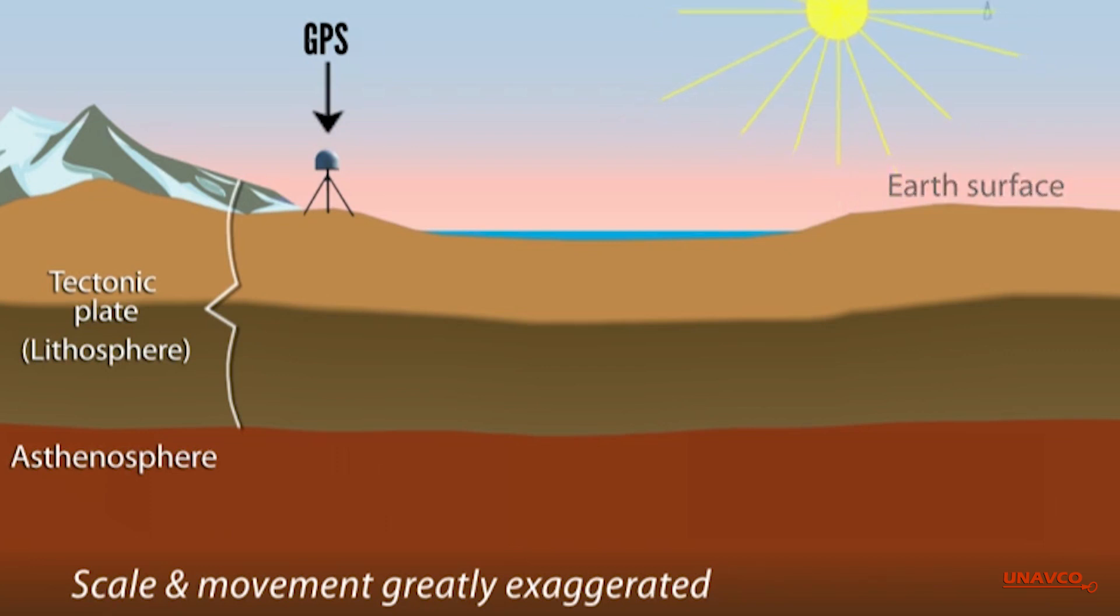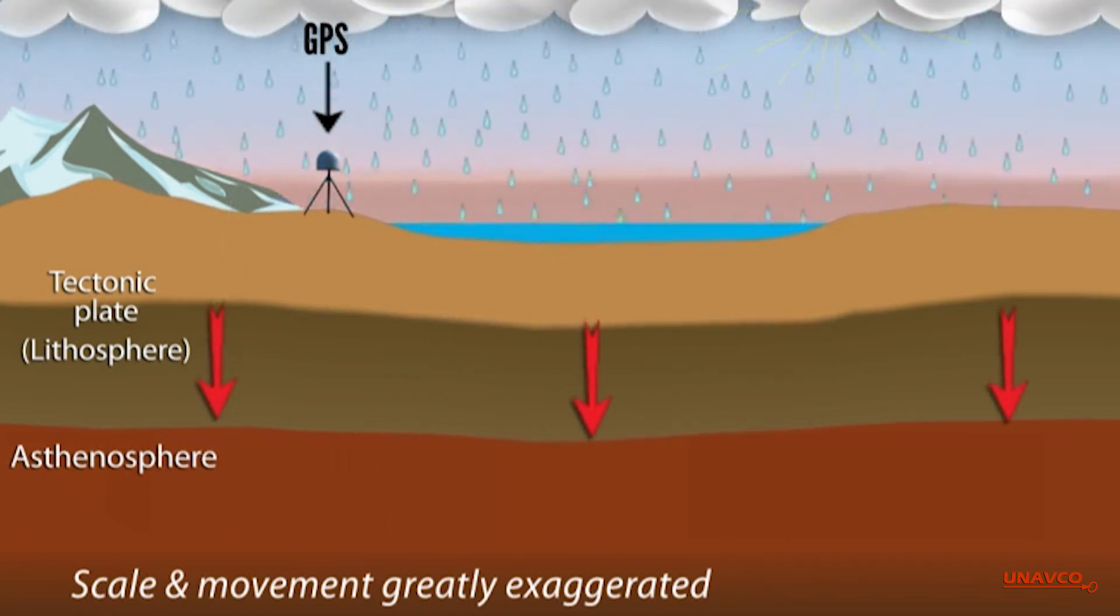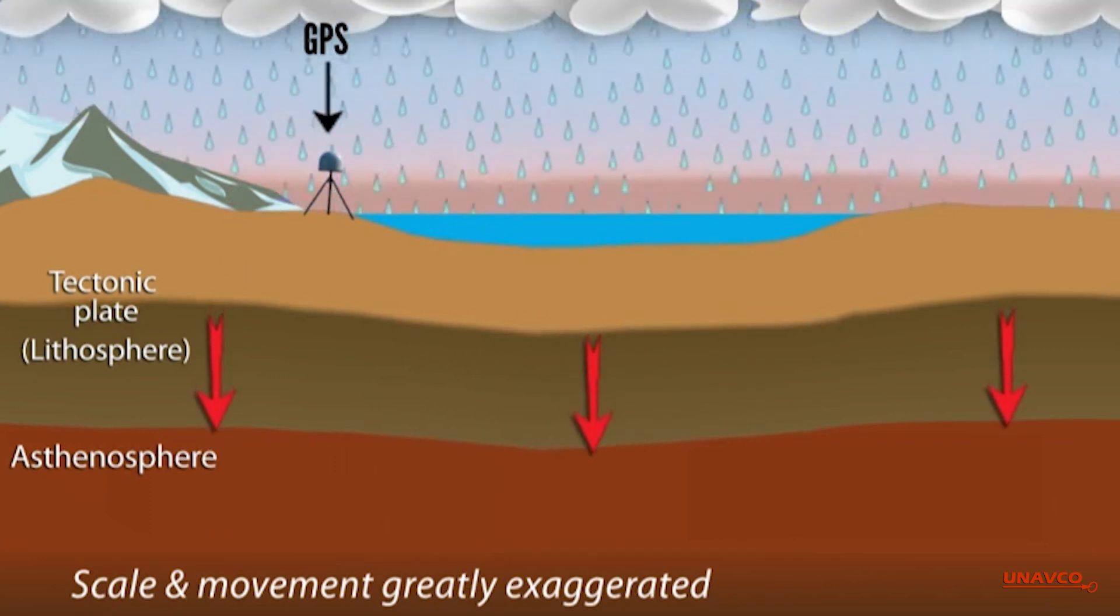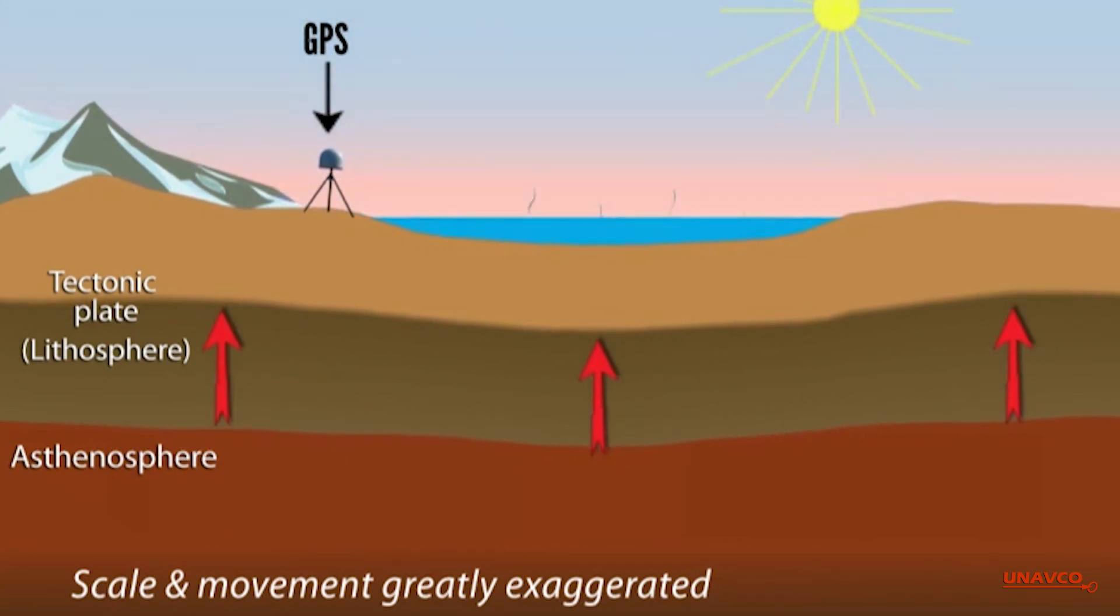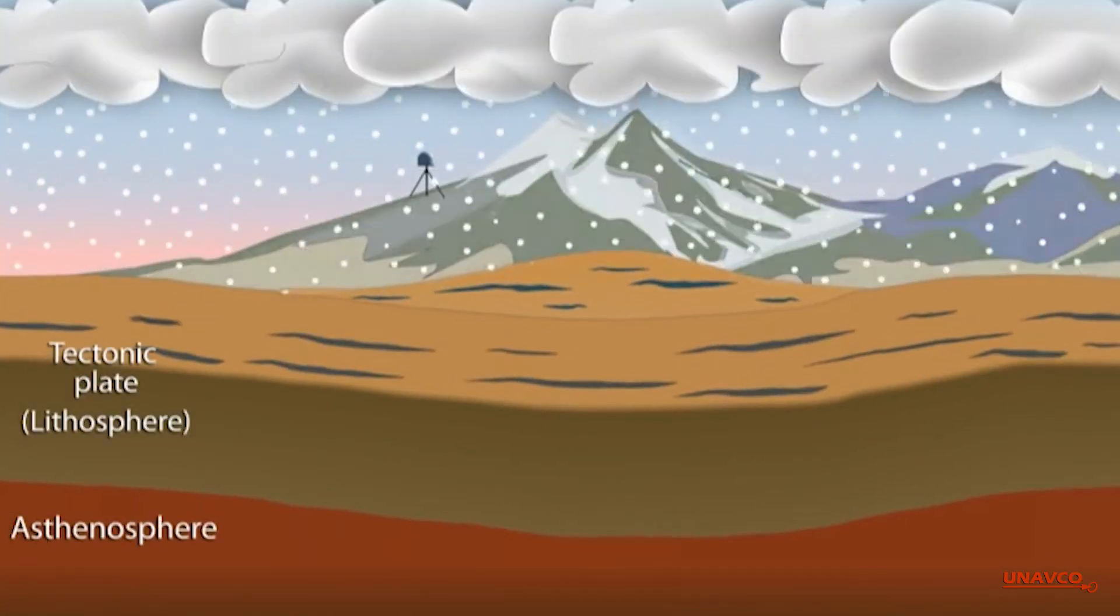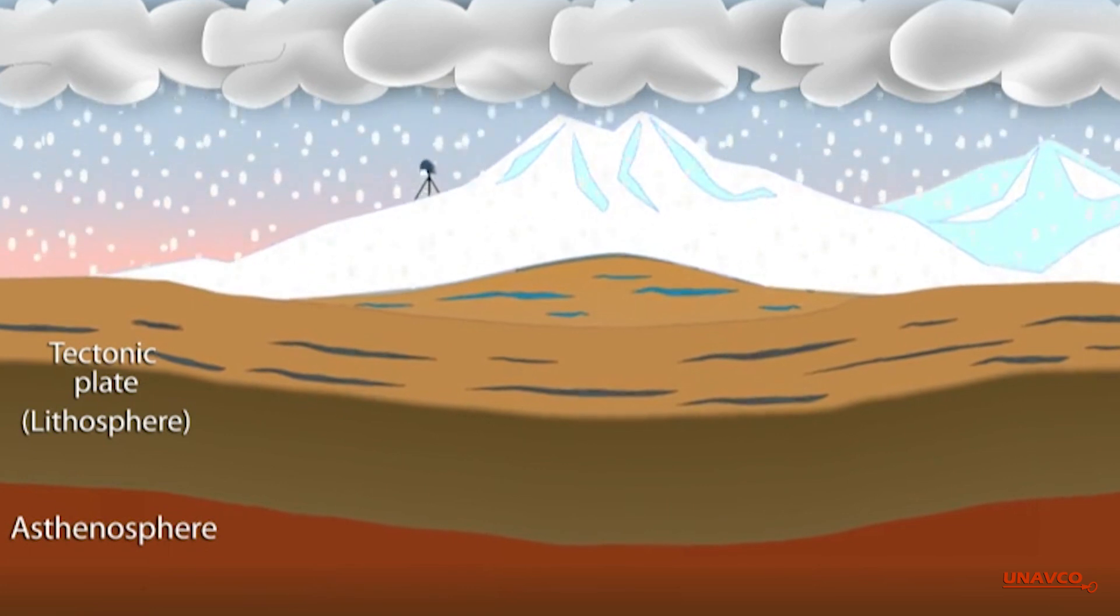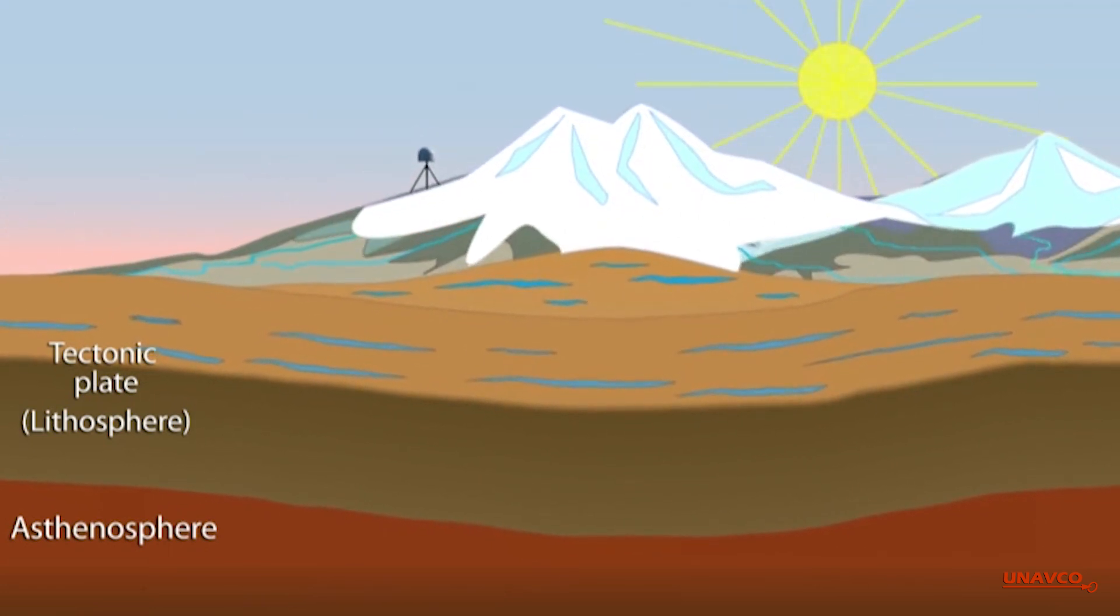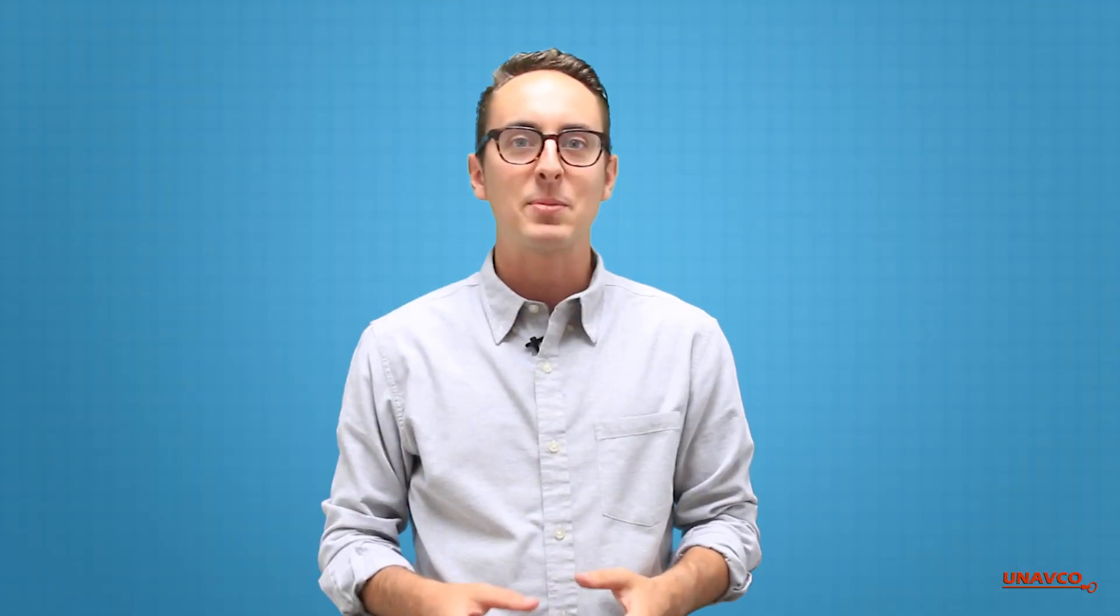Believe it or not, the Earth's surface also moves up and down during periods of drought. When water is present at or below the surface, the weight pushes the ground downwards, but when this water disappears, the surface begins to rebound. Entire mountain ranges like the Sierra Nevada grow and shrink by several millimeters, just from changes in water. High precision GPS and remote sensing can be used to monitor these small changes, and in turn monitor drought progression and recovery.